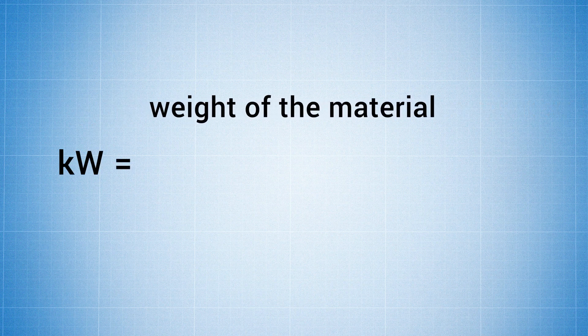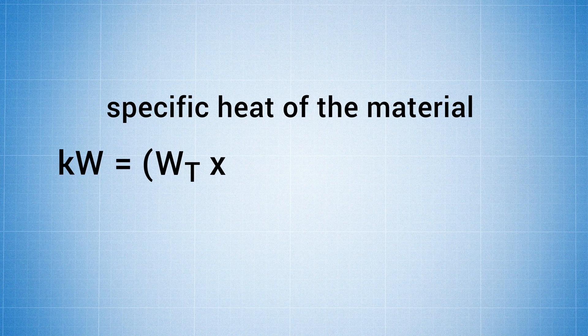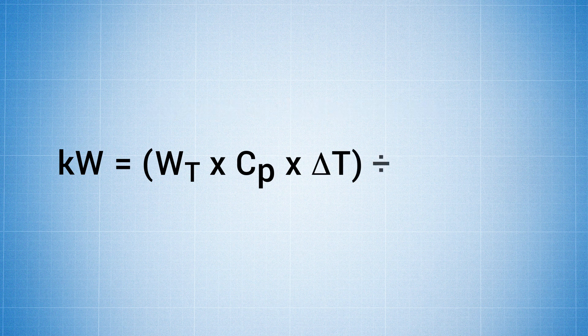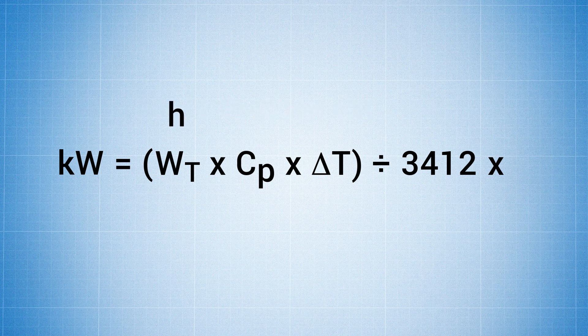Your kilowatt requirement equals the weight of the material times the specific heat of the material times the change in temperature divided by 3412 times the amount of hours you want it to reach up to your temperature set point.